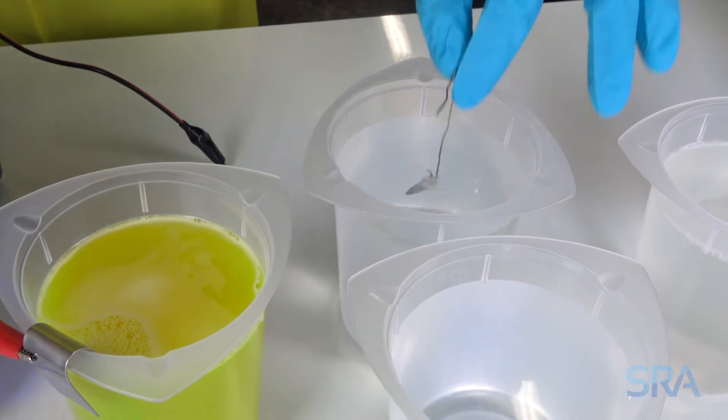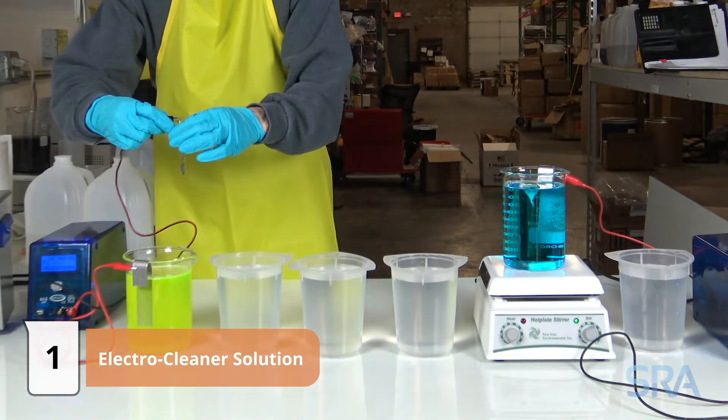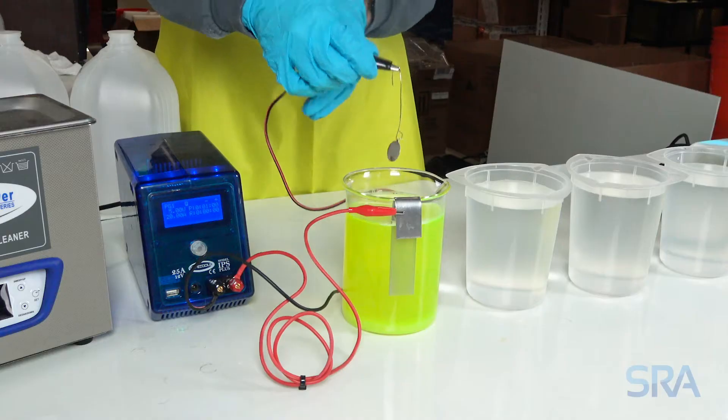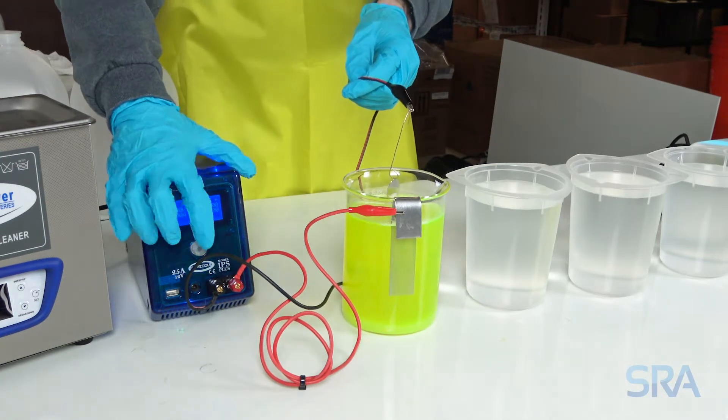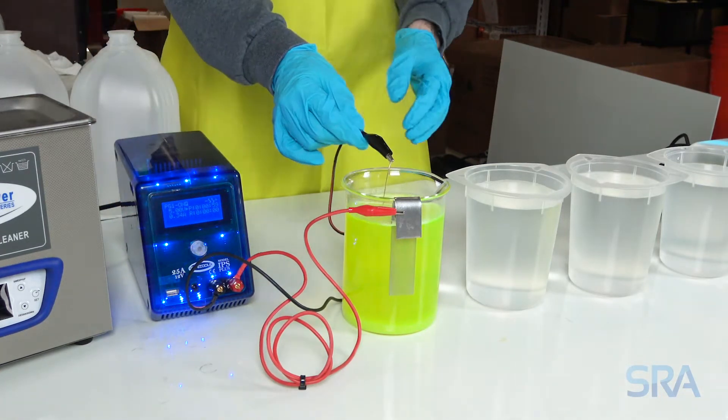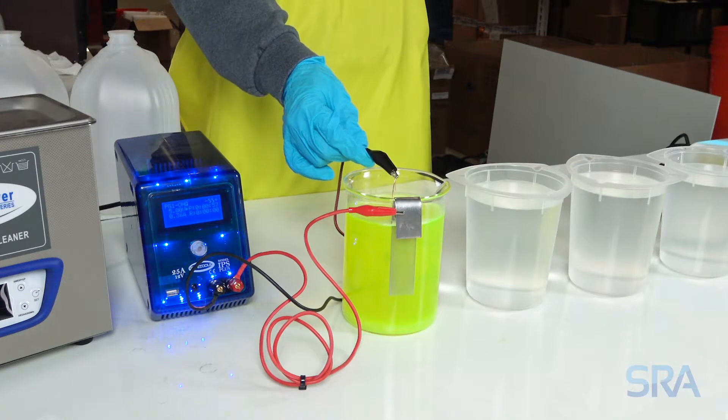Use a piece of copper wire to hold your item and connect the negative lead of the rectifier. Electro clean for one minute at 125 degrees Fahrenheit with 5 volts applied to the stainless steel anode.